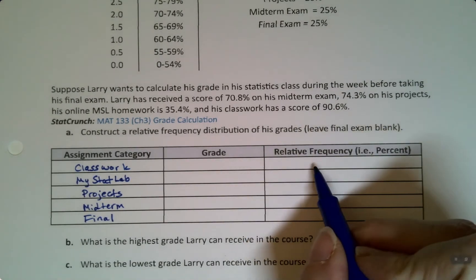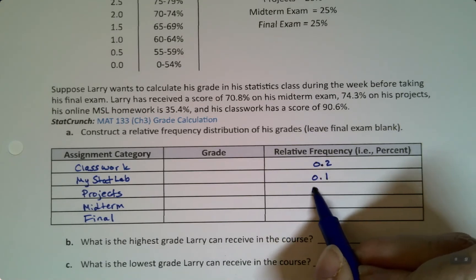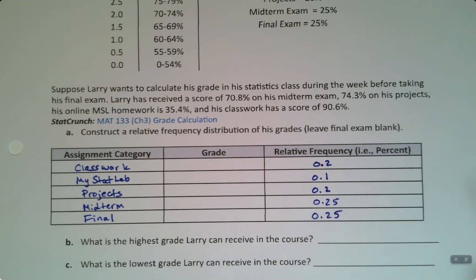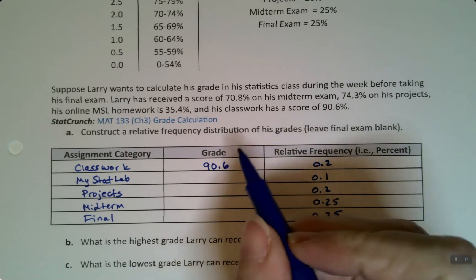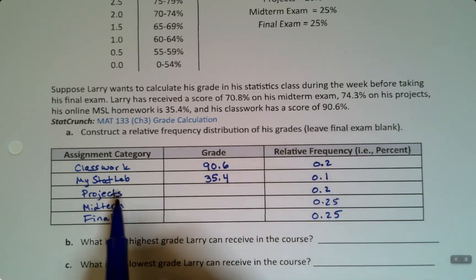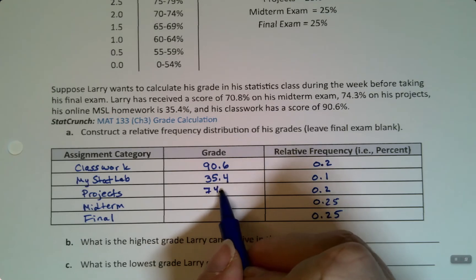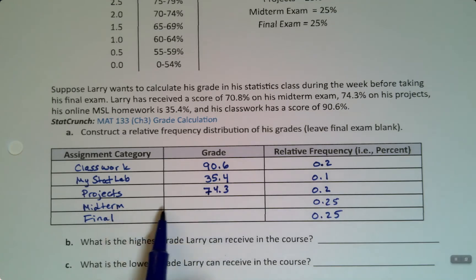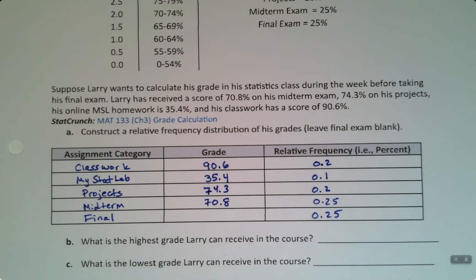We have those particular categories, and then we have the relative frequency. We know this is .2, this is .1, this is .2, this is .25, and this is .25. And then we know Larry's particular grades. So classwork was a 90.6, my stat lab was a 35.4, projects were 74.3, and the midterm was a 70.8.